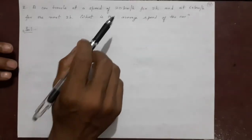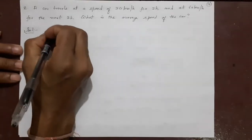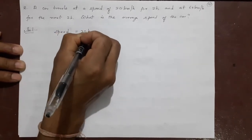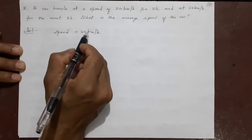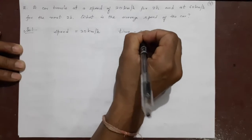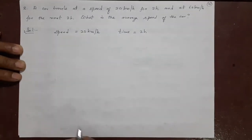A car travels at a speed of 20 km per hour. The speed is 20 km per hour. Remember the unit is not SI unit. For 2 hours, the time is 2 hours. This much you can easily understand from the question.